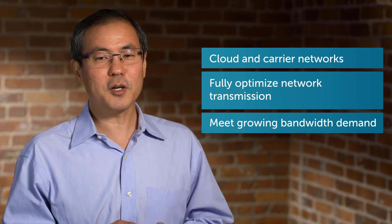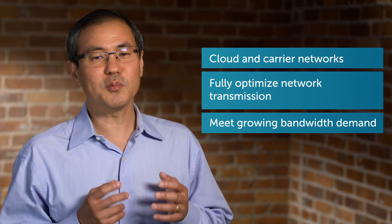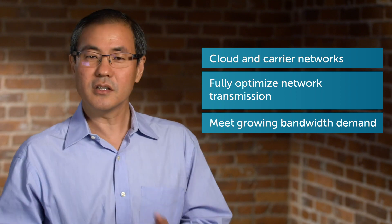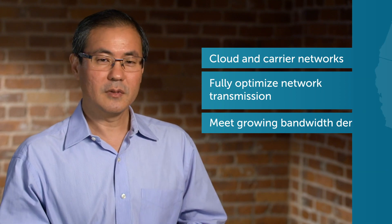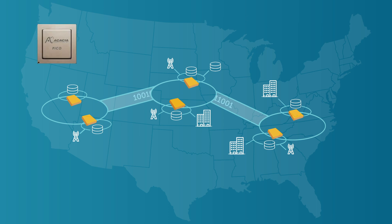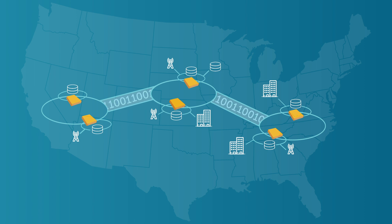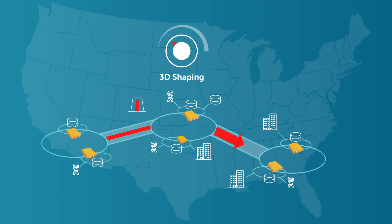3D shaping helps to turn capacity gaps into usable bandwidth by adapting the transmission to the network. Powered by Acacia's Pico DSP chip, this powerful 3D shaping capability enables network capacity optimization, bringing out the fuller potential of every optical link in the network.